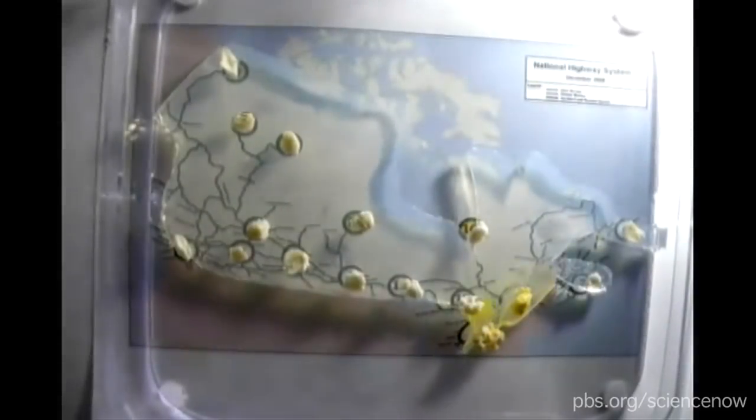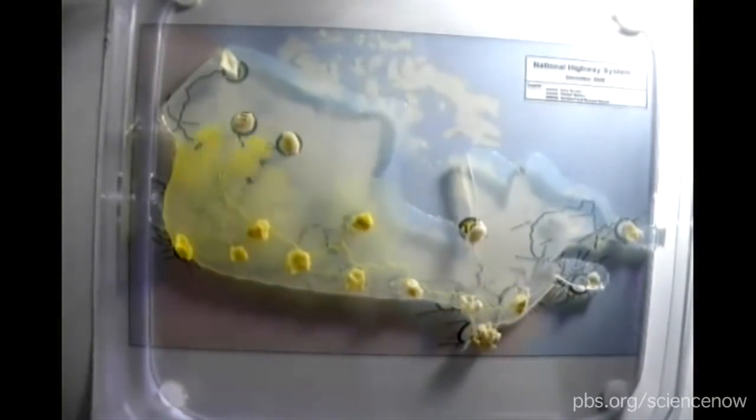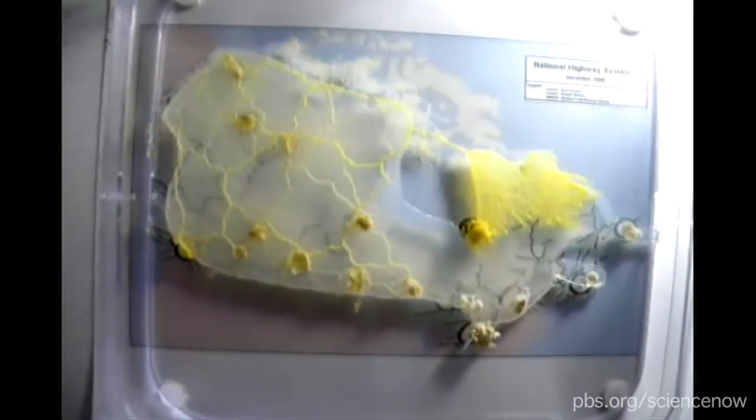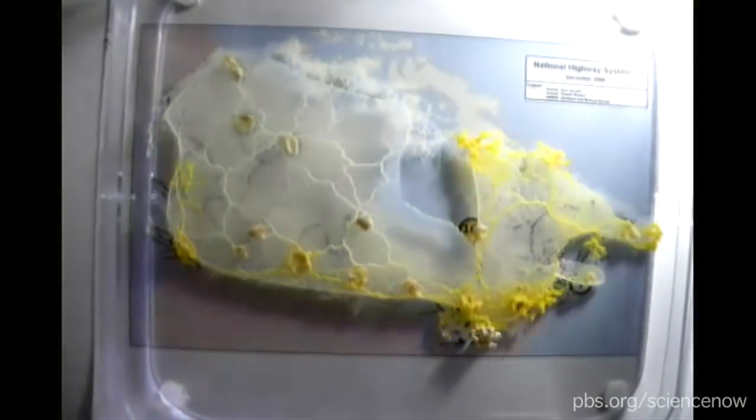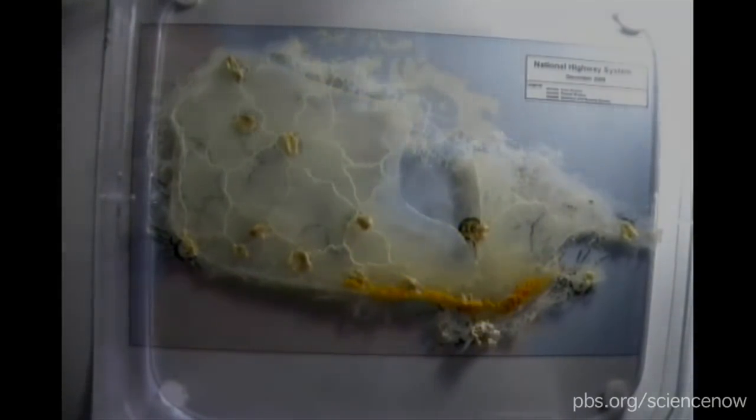But that's not all. After scientists placed food in the relative position of major cities and urban areas, slime molds accurately recreated the rail system of Tokyo and the major roadways of England, Canada, Spain and Portugal. In other words, this one cell solved a real-world problem that it took teams of engineers to figure out.